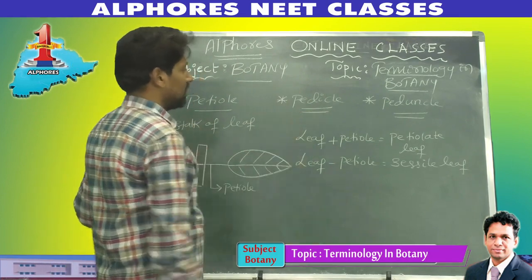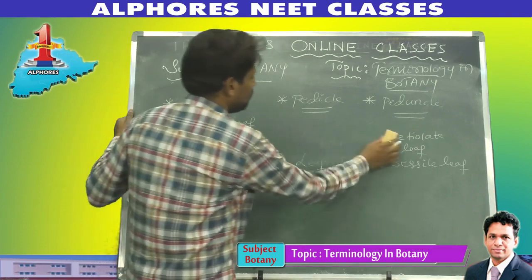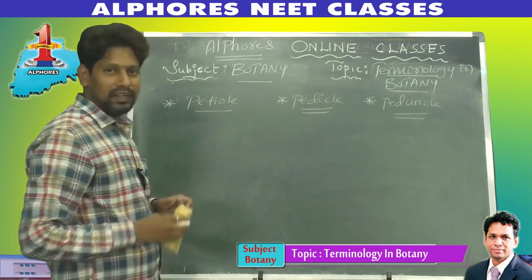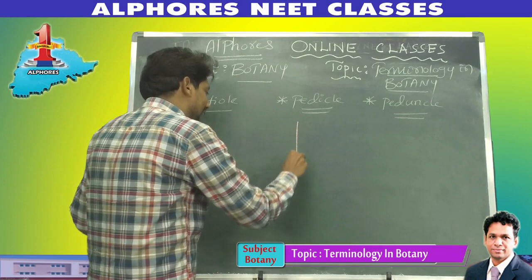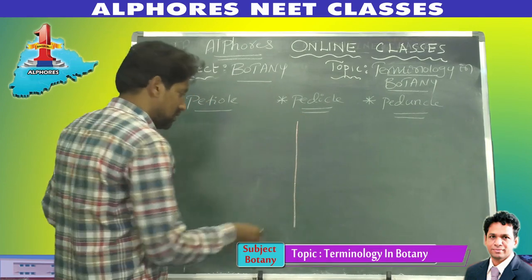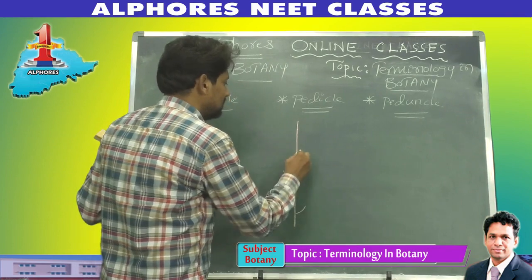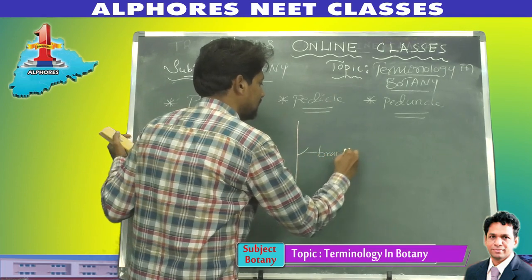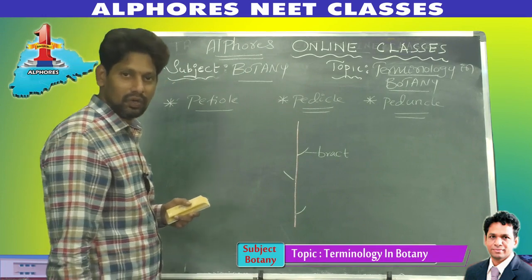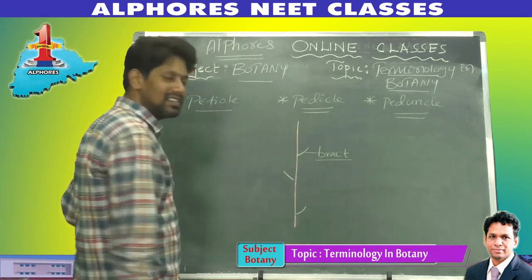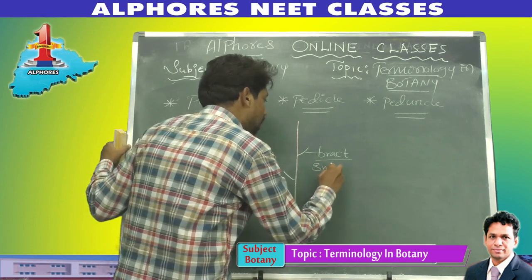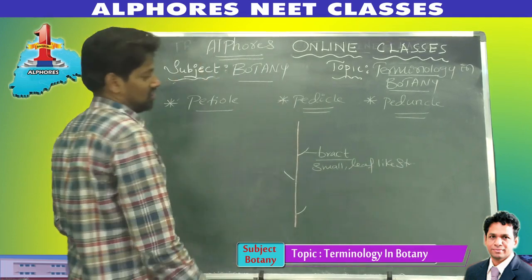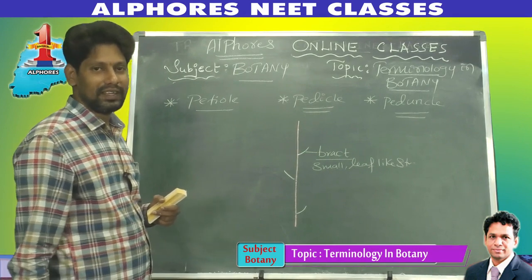Now go for the second word — pedicel. See here: this is an axis. On this axis, these small leaf-like structures are called bracts. Bract means a small leaf-like structure.